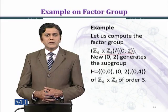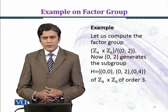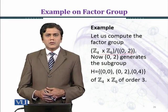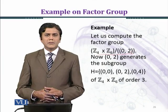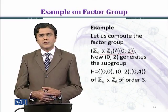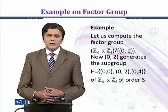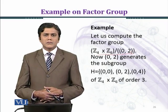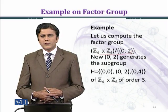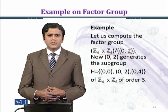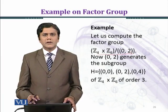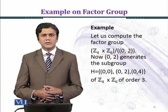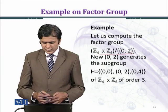The first coordinate can be 0, 1, 2, 3 and the second coordinate can be 0, 1, 2, 3, 4, 5. So with first coordinate 0, you create elements (0,0), (0,1), (0,2), (0,3), (0,4), (0,5). Then with first coordinate 1, you take all elements (1,0), (1,1), (1,2), (1,3), (1,4), (1,5), and similarly proceeding further. In this manner you can get all 24 elements of Z4 cross Z6.